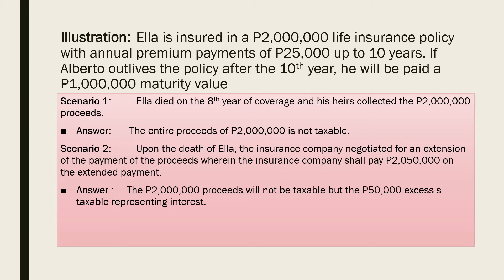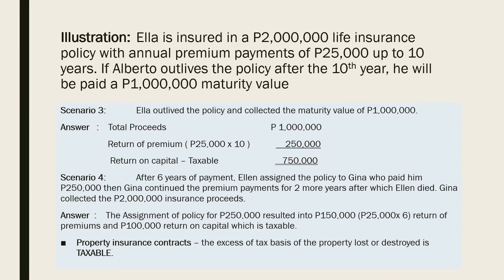Scenario 2: Upon Ella's death, the insurance company negotiated an extension and shall pay $2,050,000 on the extended time. The $2,000,000 proceeds are not taxable, but the $50,000 excess is taxable as it represents interest. Scenario 3: If Ella outlived the policy and collected the $1,000,000 maturity value, only the return on capital is taxed. The premium payments were $25,000 times 10 years, equaling $250,000. So there is a return on capital of $750,000, which is taxable as part of basic tax.